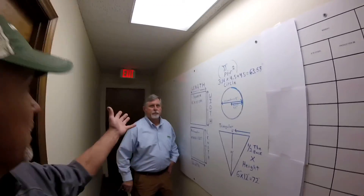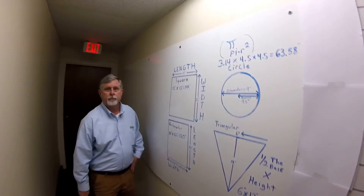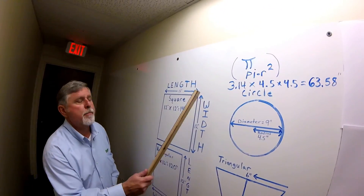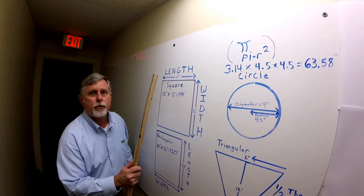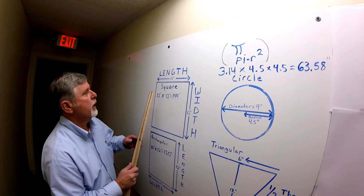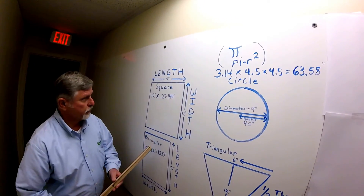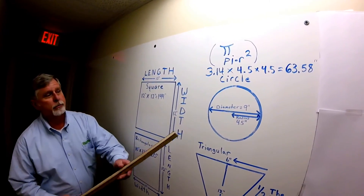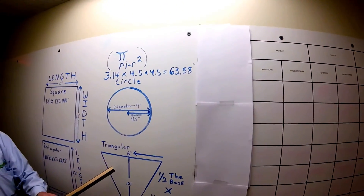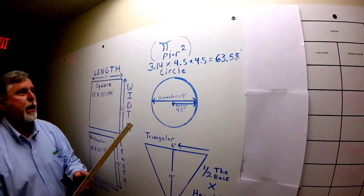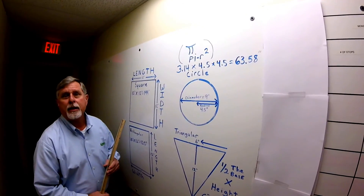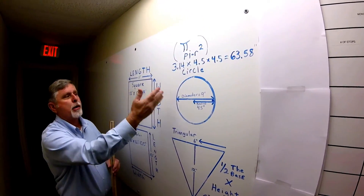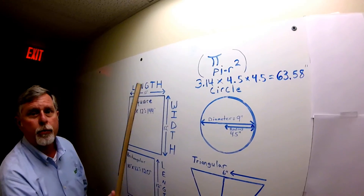Let's go over the basics of obtaining your square footage. If we pull up to a lawn and we're going to measure to get square footage for our pricing, we have a square, a rectangle, a circle, and a triangle. You may have all these shapes in your lawn, so we're going to have to measure each one to get the proper square footage.